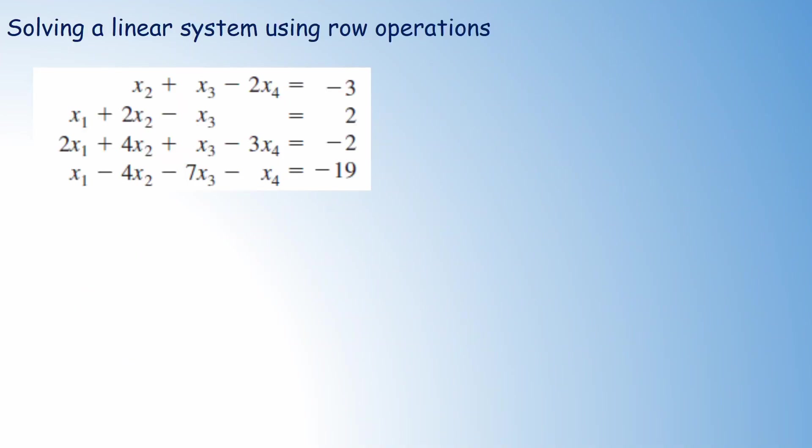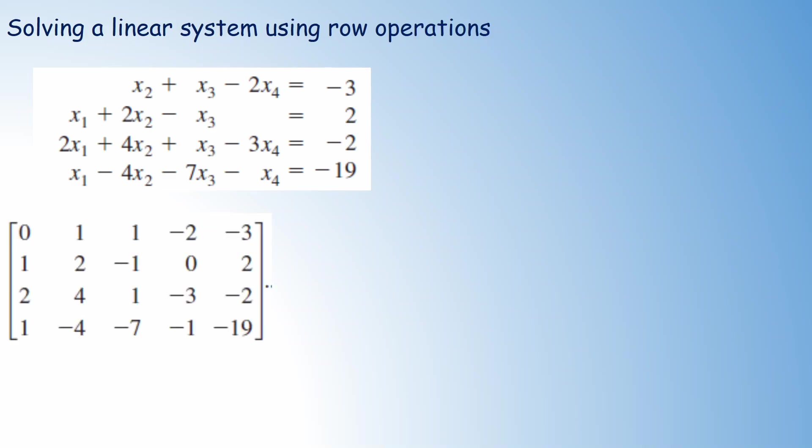Suppose we are given this system of linear equations: x2 plus x3 minus 2x4 equals minus 3; x1 plus 2x2 minus x3 equals 2; 2x1 plus 4x2 plus x3 minus 3x4 equals minus 2; x1 minus 4x2 minus 7x3 minus x4 equals 19. First of all we have to assemble the augmented matrix of this system.